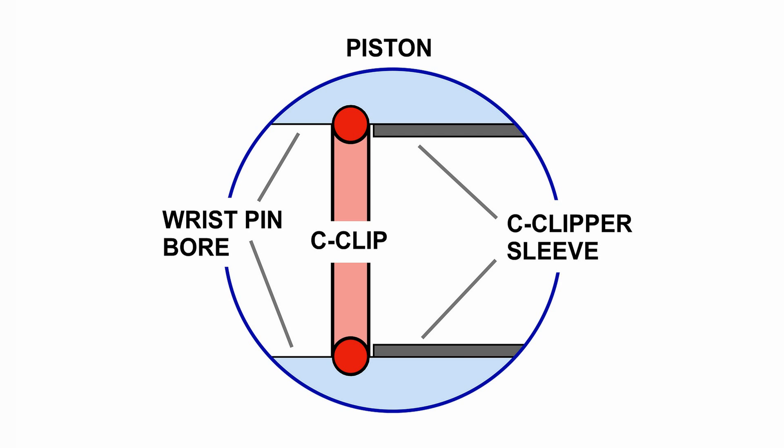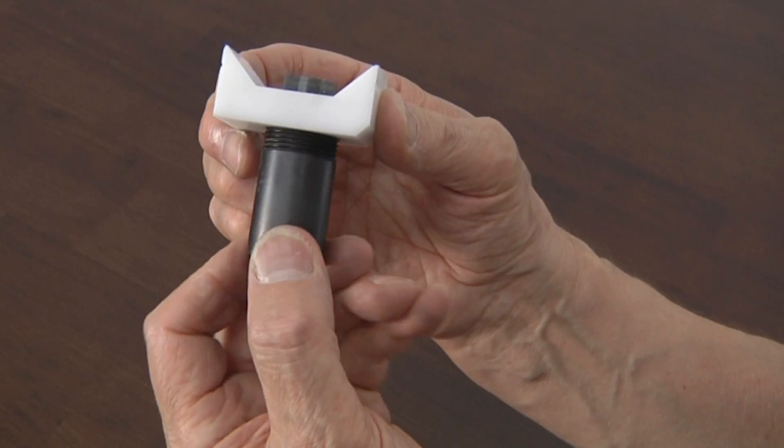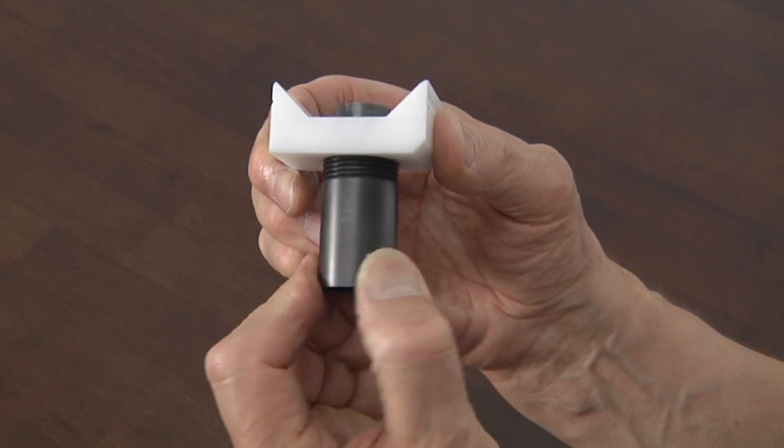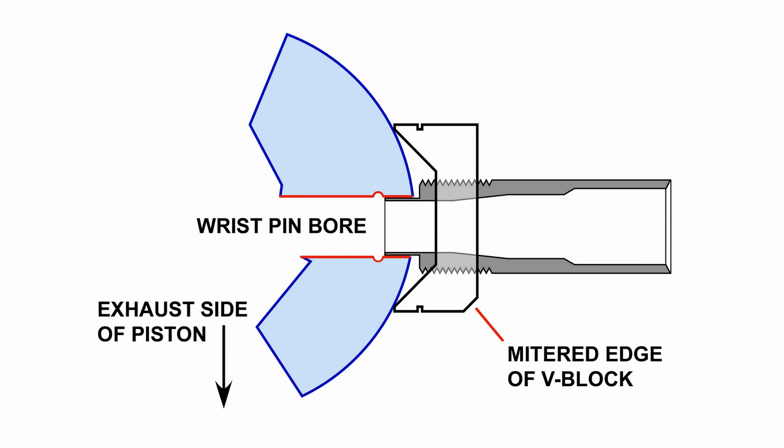We'll start with the two-stroke piston. The first thing you need to do is set the depth of the C-Clipper sleeve so its nose is just short of the C-clip groove in the piston. We do this by rotating the C-Clipper sleeve in the white V-block, which sits against the side of the piston.